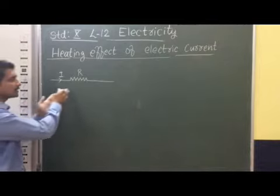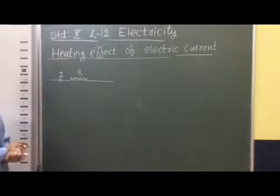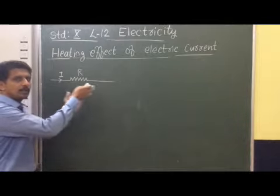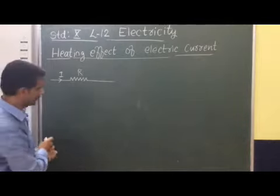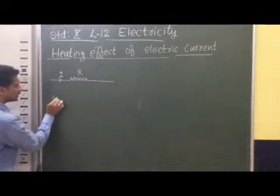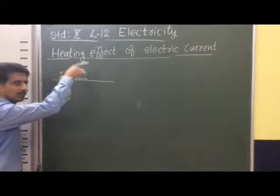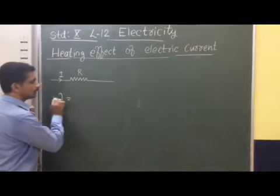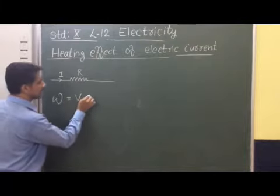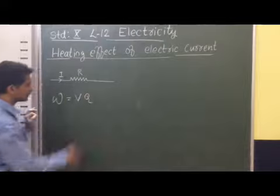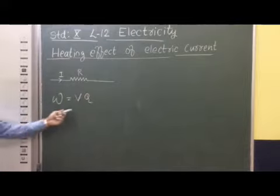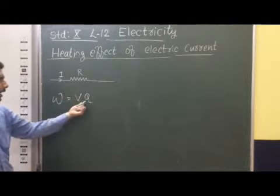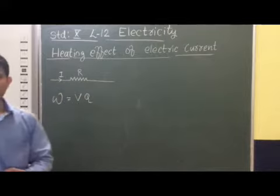That means there is a charge that is flowing through this conductor. We can calculate what is the work done in moving this charge from one end to another end of this conductor. The work done is given as W is equal to V into Q, where V is the potential developed across this conductor and Q is the charge which is flowing.